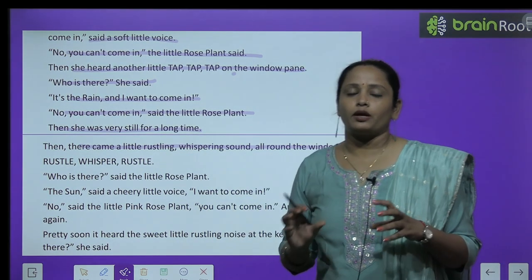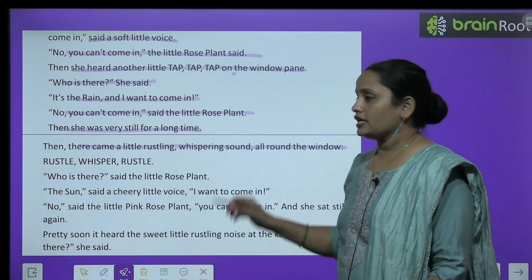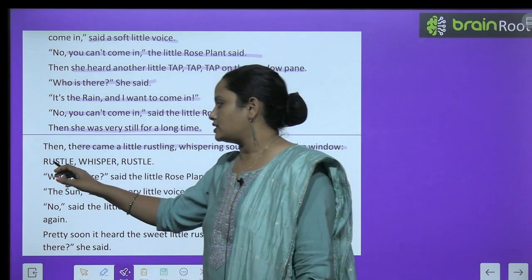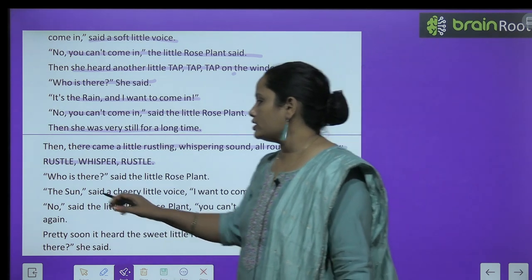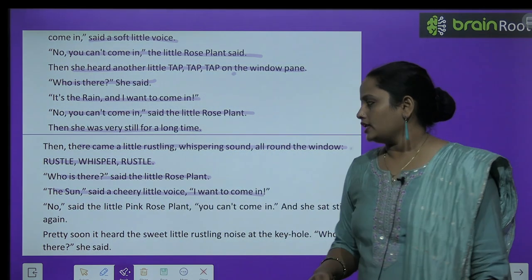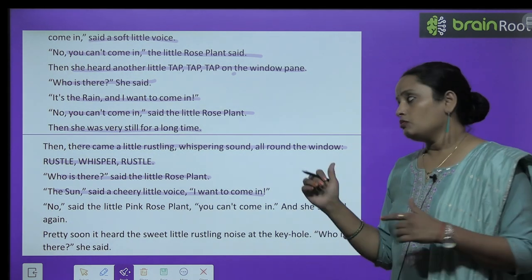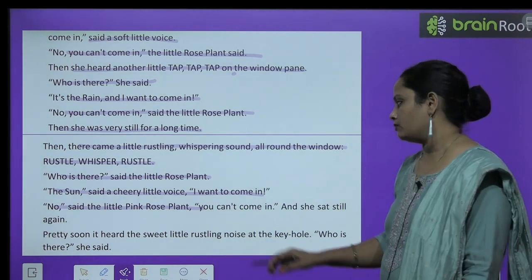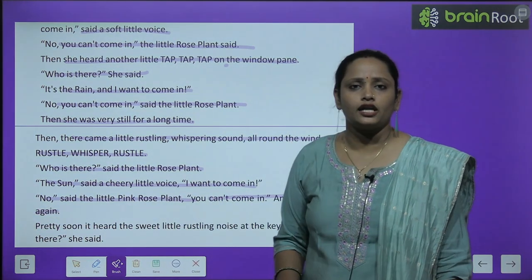'Rustling' — जैसे सूखे पत्ते चलते हैं उनकी आवाज़, और 'whispering' — कुछ खुसपुसाने की आवाज़, जैसे कोई चुपचाप धीरे-धीरे कान में कह रहा हो। 'Who is there?' said the little rose plant. 'The sun,' said a cheery little voice, 'I want to come in.' But the little pink rose plant said, 'No, you cannot come in,' and she sat still again.